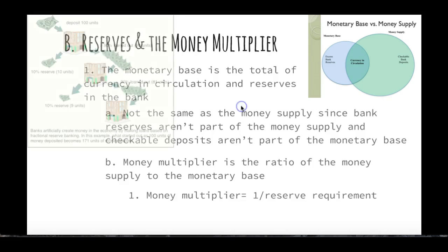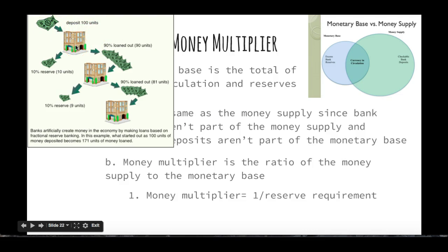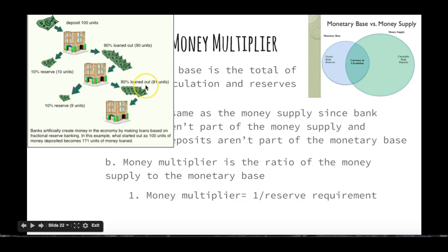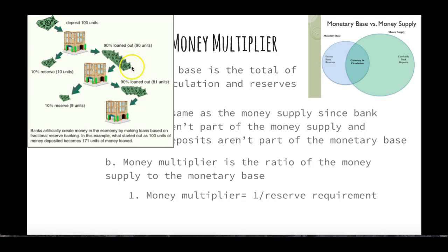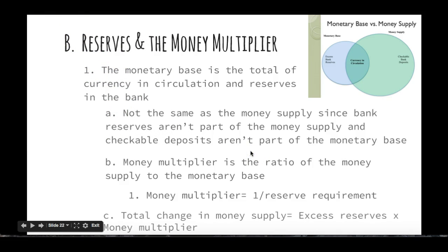What are you going to use the money multiplier for? Here's how it works: we deposit $100 in, the reserve requirement is 10%, so we have to save $10, and 90% — $90 — can be loaned out. Then we save 10% of that, which is $9, and loan out the other 90%, which is $81. They're basically creating money. Rather than adding all that up, we can find the total change in the money supply by taking the excess reserves times the money multiplier. Make sure you're multiplying the excess reserves — not that initial $100, because it hasn't had required reserves taken out yet.